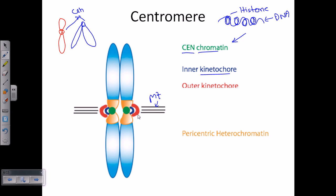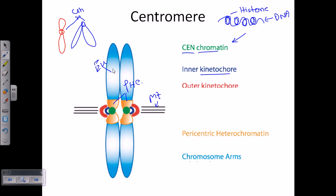After that we have pericentric heterochromatin. Heterochromatin is a portion of chromatin where non-coding genes are usually present — genes which are not being transcribed or translated into proteins, so they are kind of functionless. The blue-colored sections are the euchromatin sections, which contain all the coding regions of the chromosome that produce proteins. These are also called chromosome arms. So in a sense, these are all the sections of a chromosome and a part of the centromere.